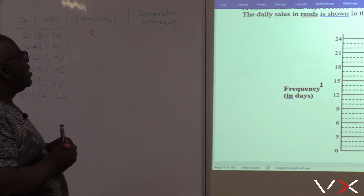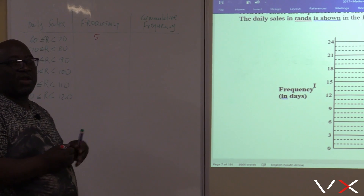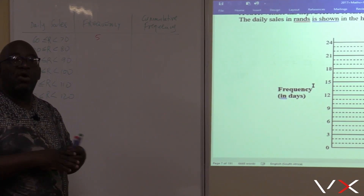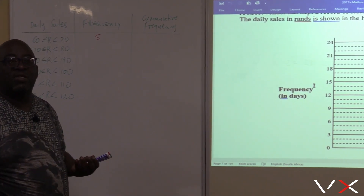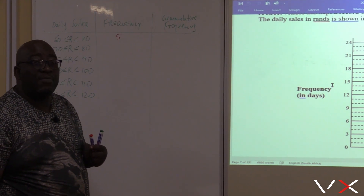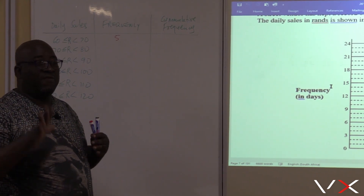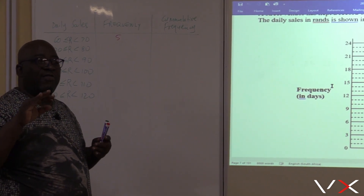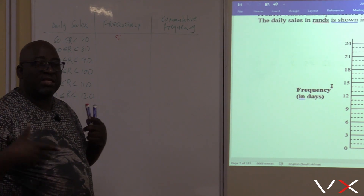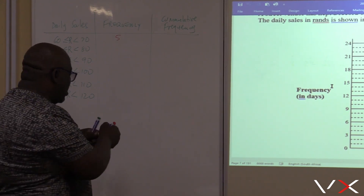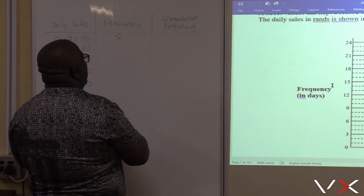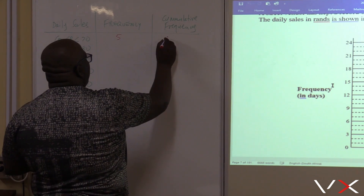What is cumulative frequency? Cumulative frequency is when you add all the frequencies that you have up to that particular point. So at the beginning, the frequency is 5. There is nothing else to add to it. So the cumulative frequency in this particular case will also be equal to 5.